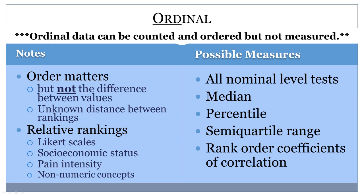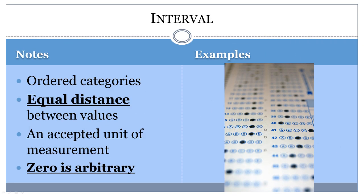Interval-level data is ordered like ordinal data, but the intervals between each value are known and equal. Therefore, the difference between two values is meaningful for interval variables. The zero point is arbitrary, since a score of zero does not actually mean that the variable does not exist. Zero simply represents an additional point of measurement.